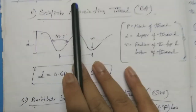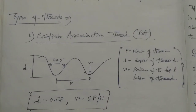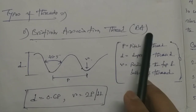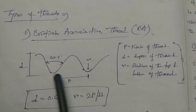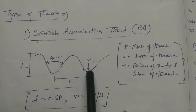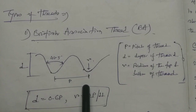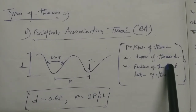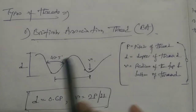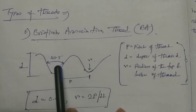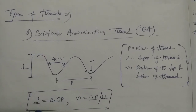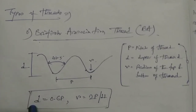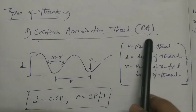Now the types of thread used in industry. The first is British Association (BA) thread. The BA thread has a thread angle of 47.5 degrees. The depth of thread formula is D = 0.6 × pitch, and the radius formula is R = 2P/11. These are the standard formulations for the BA thread.